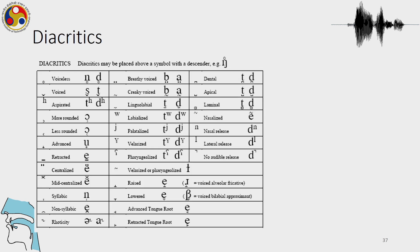These are the diacritics that we just talked about: for voiceless sounds which can be produced as voiced, we have diacritics for that; for voiced sounds which can be de-voiced, we also have a symbol for that; symbols for aspiration, symbol for more rounding, less rounding, symbol for advanced, retracted, centralized — these are all vowel diacritics — and mid-centralized, and also syllabic and non-syllabic etc.